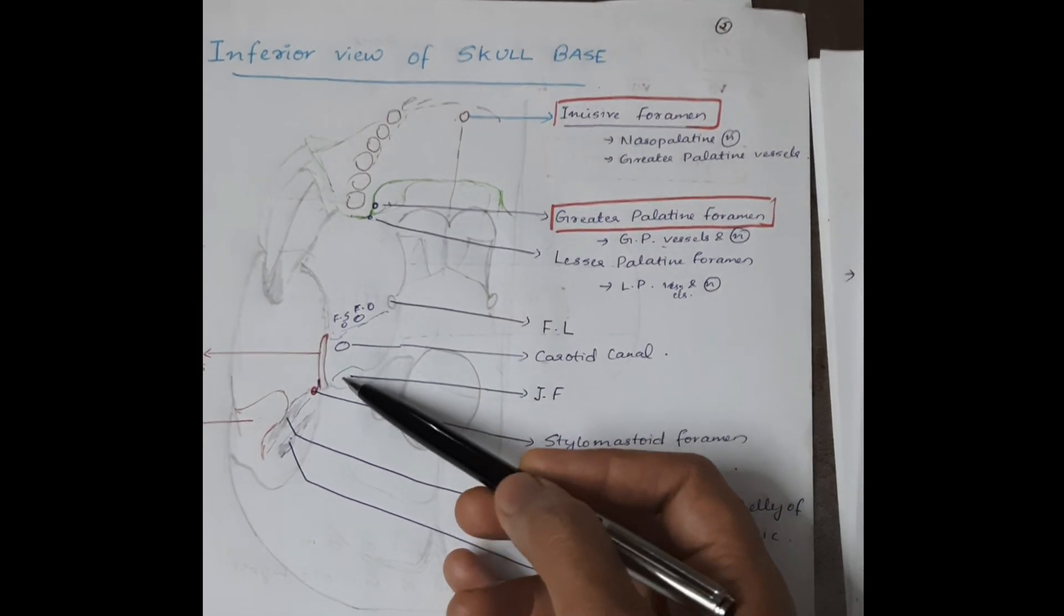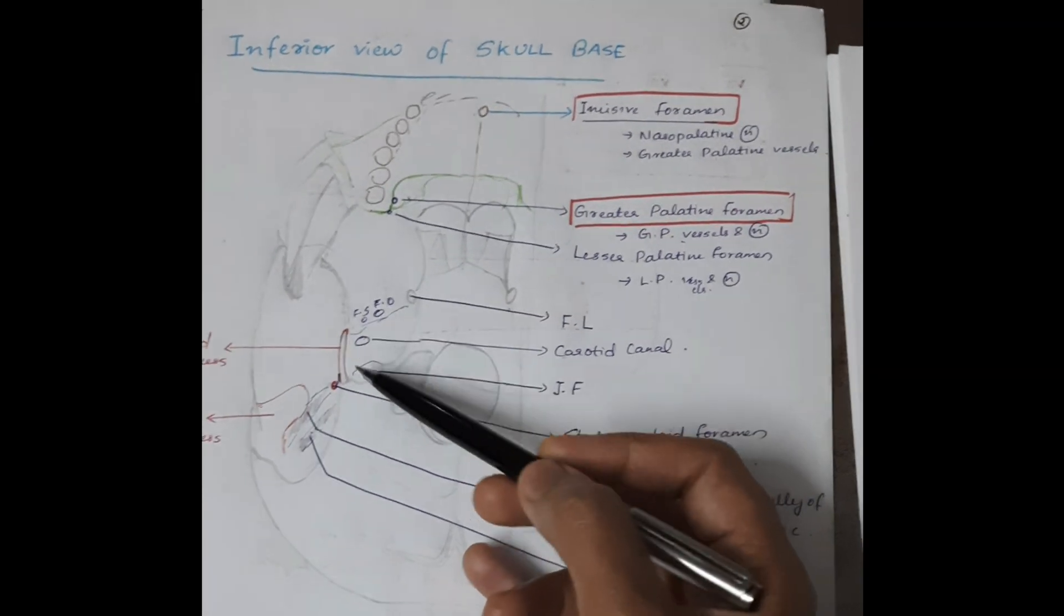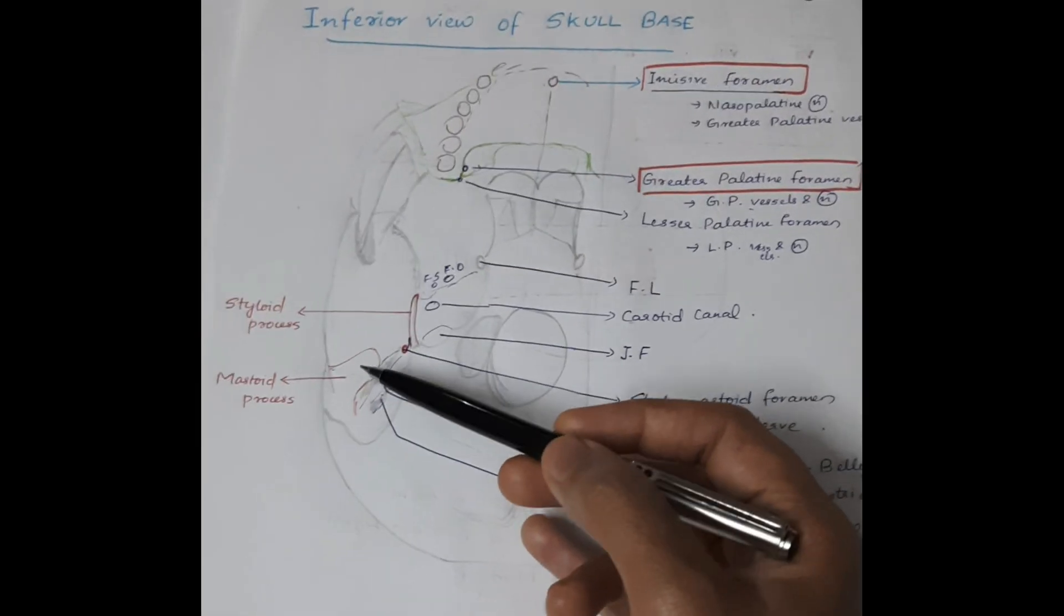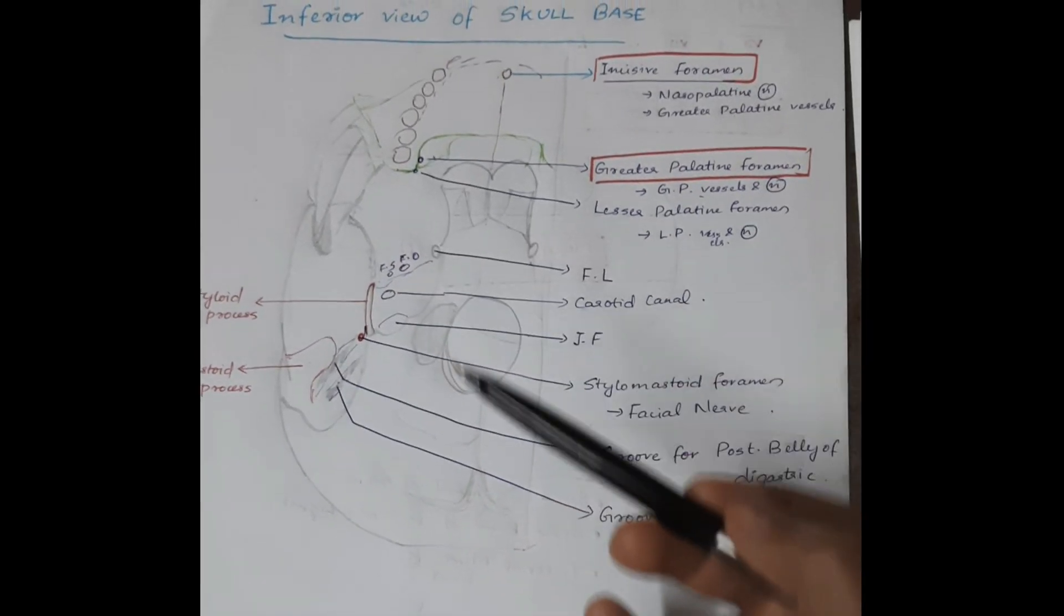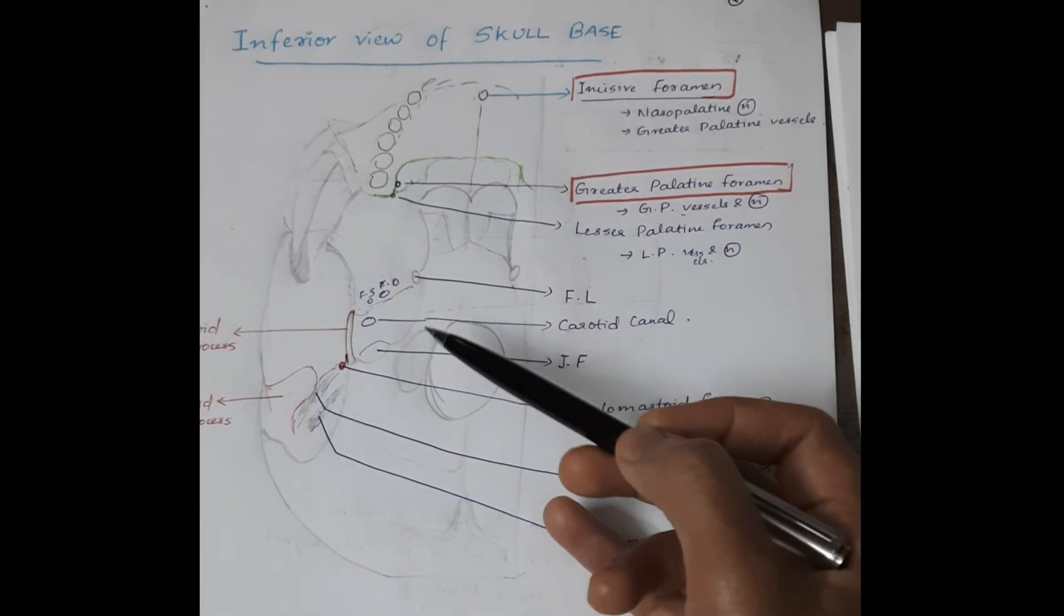This is the carotid canal. This is the styloid process and this is the mastoid process, and this is the jugular foramen.